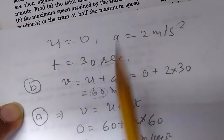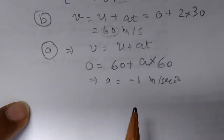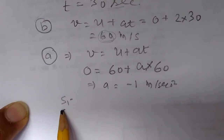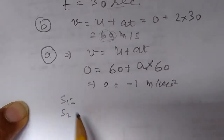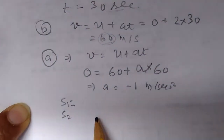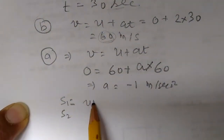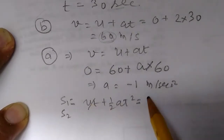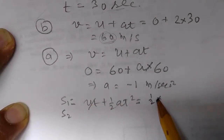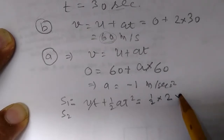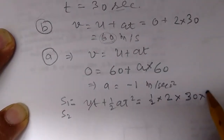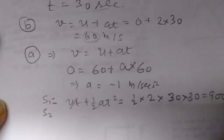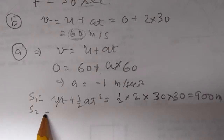The total distance moved by the train is S1 plus S2. For S1, using s equals ut plus half at squared: ut is zero, so we have half times acceleration two times time squared — 30 times 30 equals 900 meters. So S1 is 900 meters.